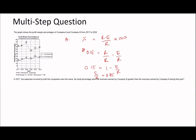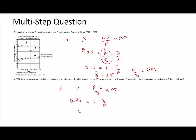Since expenses are the same for both companies, E over 0.85 equals the revenue for A. Doing the same for B: percentage equals expenses divided by revenue times 100. The percentage for B is 45%, so bringing the 100 over: 0.45 equals 1 minus E over R. Rearranging, E over R equals 0.55, so E over 0.55 equals revenue for B.